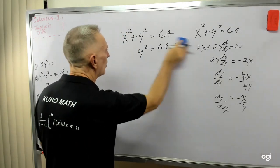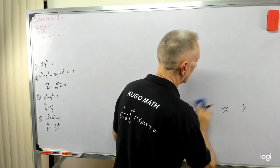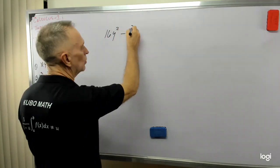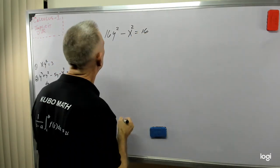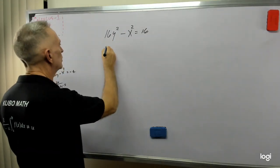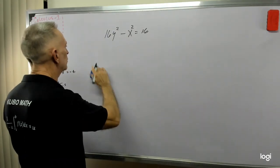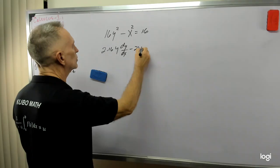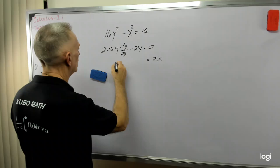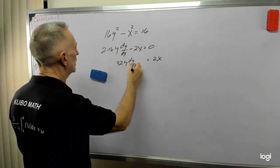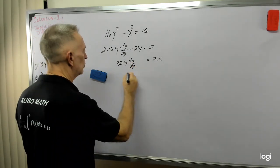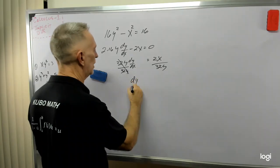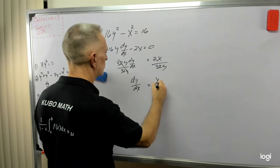That was a quick problem in implicit differentiation. Let's work another one: 16y squared minus x squared equals 16. Taking the derivative: bring the 2 down, 2 times 16 is 32y to the first, dy dx, minus 2x equals 0. Bring the 2x over: 32y dy dx equals 2x. Dividing both sides by 32y gives dy dx equals x over 16y.